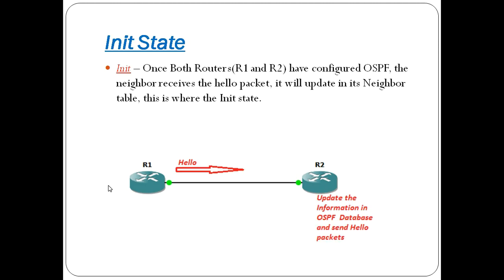Next is the init state. In the init state, you need OSPF configuration on both routers. R1 will send a hello packet and receive the database. You will need to update the database. In the init state, you update the neighbor information.